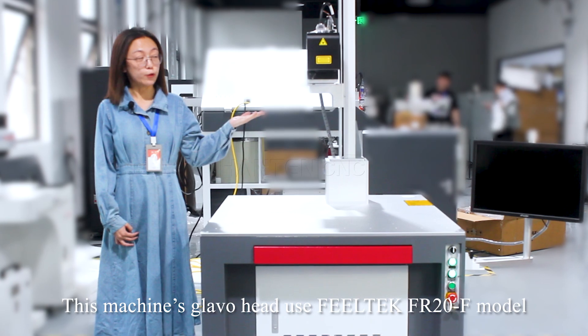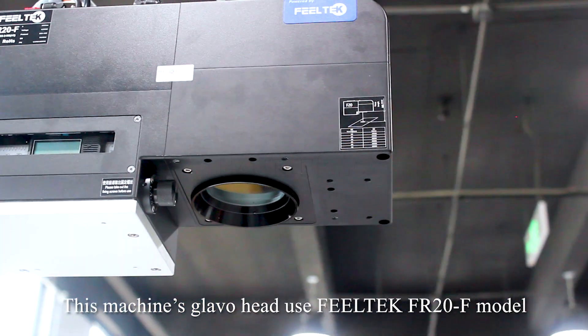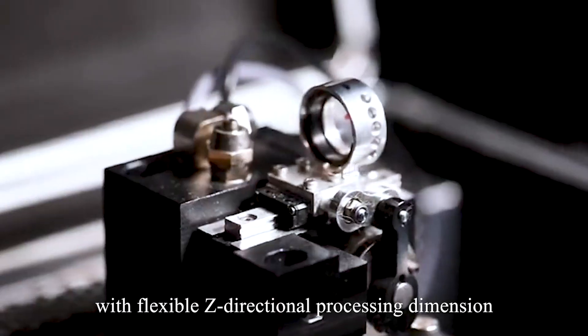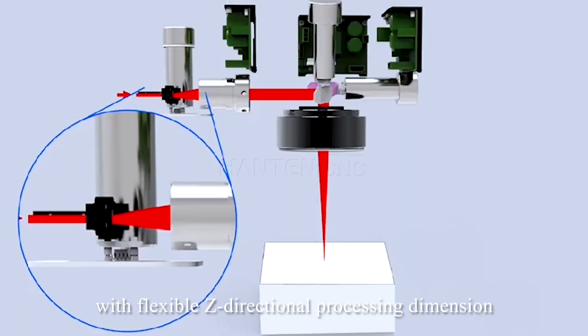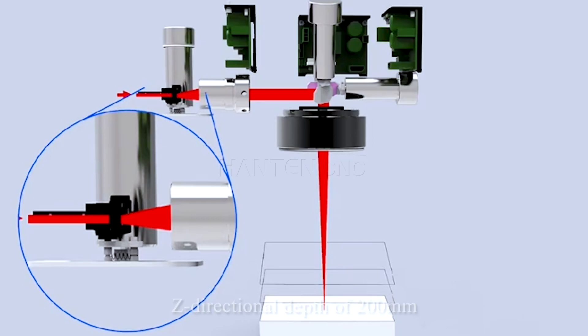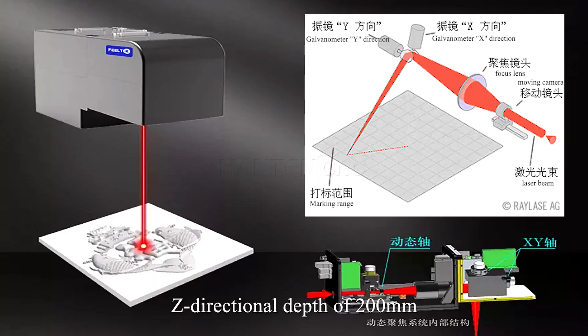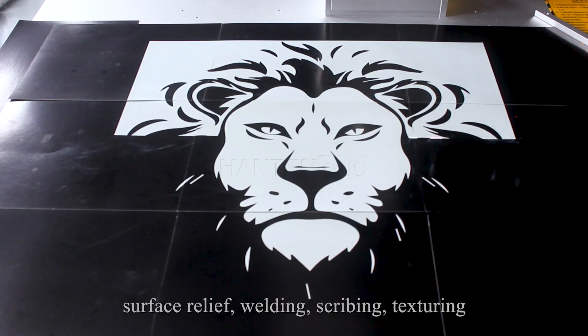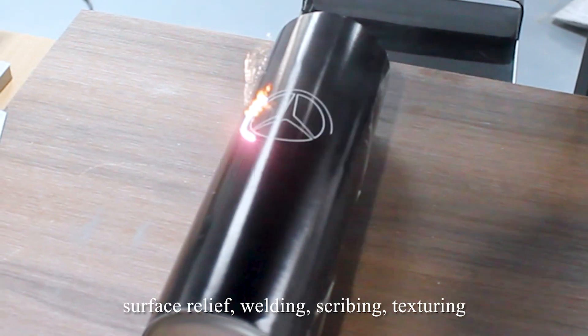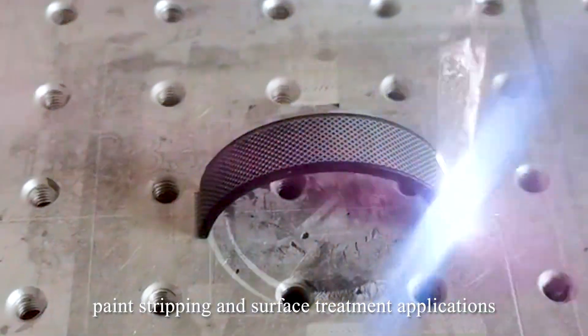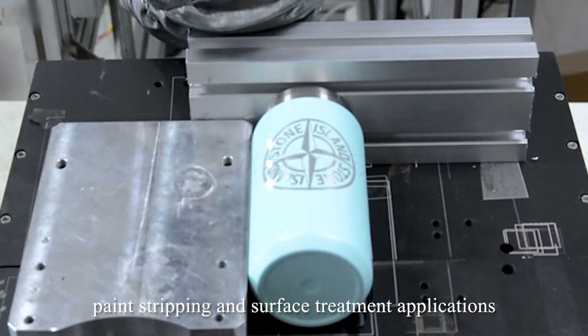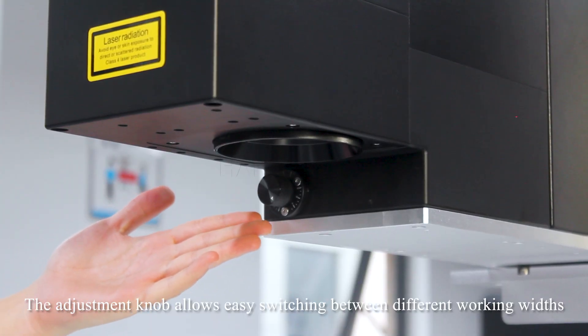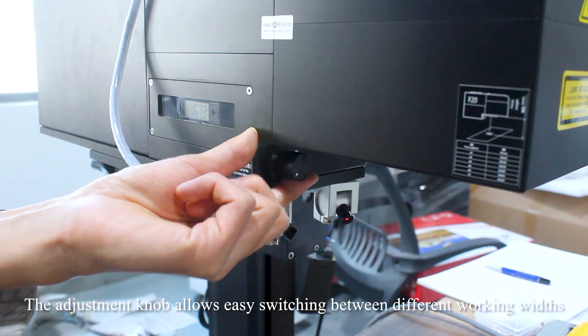This machine's galvo head uses Deutek FR20F model with a 3D dynamic focusing system with flexible Z-directional processing dimension. Z-directional depth of 200 millimeters, excellent performance in large surface marking, surface relief, welding, scrubbing, texturing, paint stripping and surface treatment applications. The adjustment knob allows easy switching between different working routes.